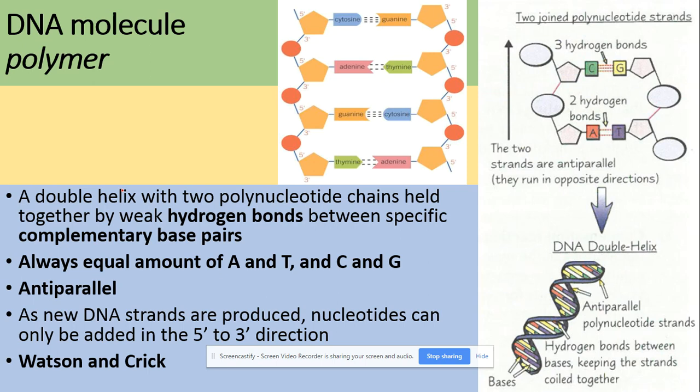In terms of the DNA molecule, it's a polymer. It's a double helix as we can see here, which is made of two polynucleotide chains held together by weak hydrogen bonds. Those hydrogen bonds are between the nitrogen-containing bases where cytosine always binds with guanine by three hydrogen bonds and adenine binds with thymine by two hydrogen bonds.